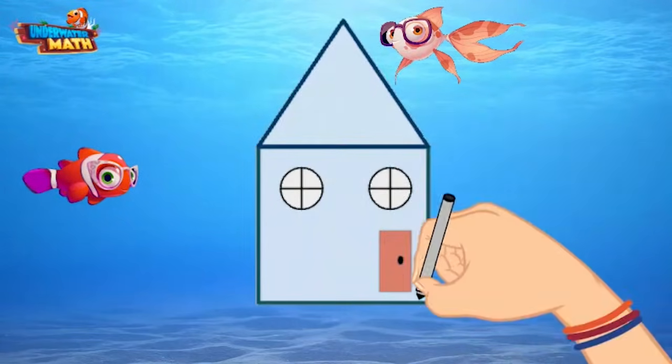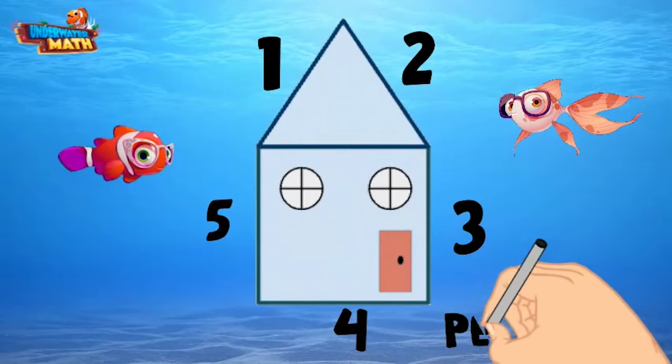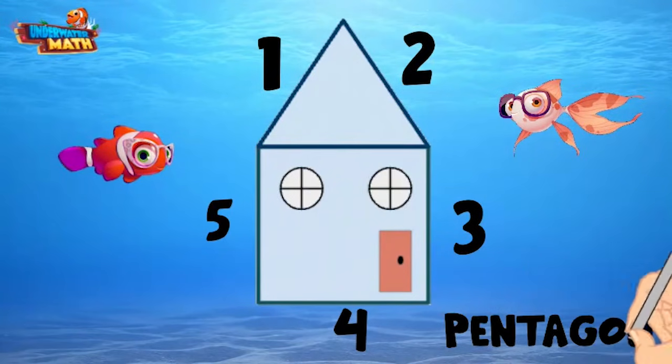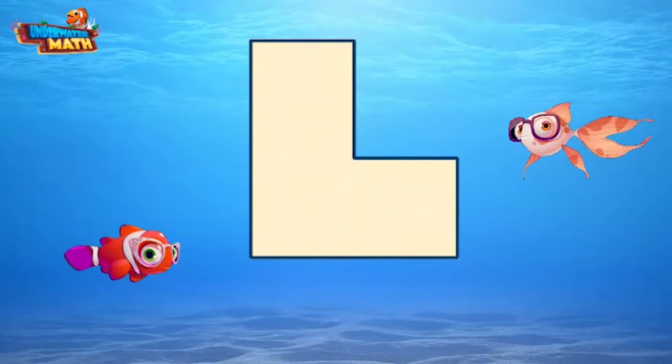For example, if I drew this house it has five sides, I would consider it a pentagon, right? Again, any five-sided shape is considered a pentagon. And if I drew this super weird shape that doesn't actually resemble anything, I could count the sides and classify it.